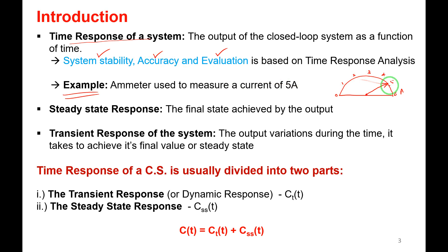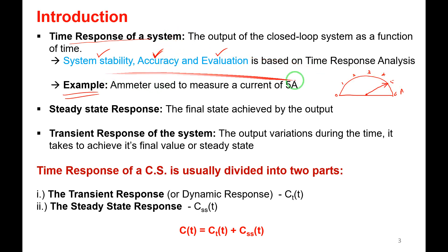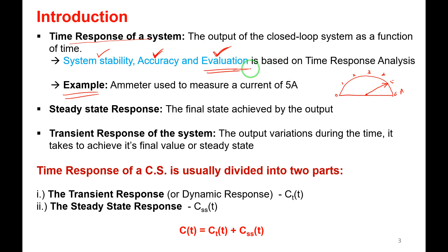Regarding accuracy: the ammeter may measure 4.9 or 5.1 amps. If it measures exactly 5 amps, the system is 100% accurate. If it measures 4.9 or 5.1, it has a tolerance of plus or minus some percentage and is not fully accurate. After settling, the pointer should stand firmly at 5 amps without deflecting — then I say the system is stable. If the system is both stable and accurate, I will approve or evaluate it positively. This is how time response analysis is used for system evaluation.